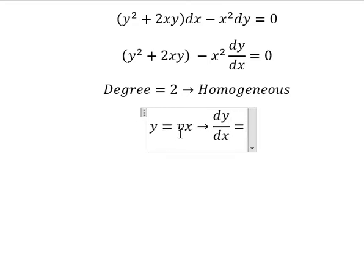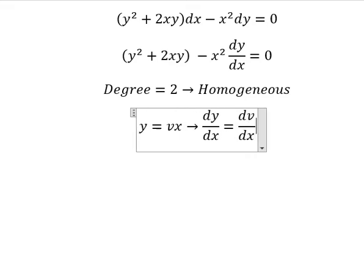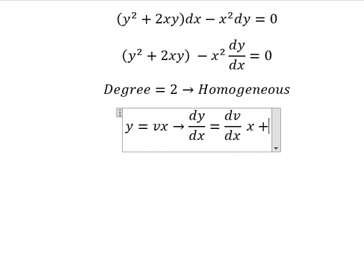That means we do first the differential for both sides. We do first the differential of v, so we have dv over dx multiply by x. Later we do first the differential of x, we got about number one, so we have v in here.